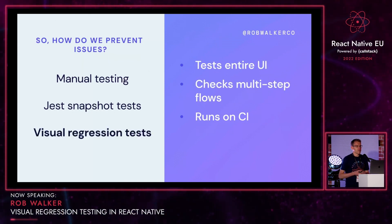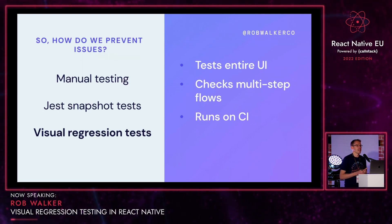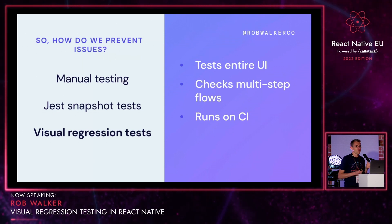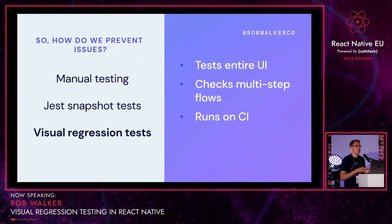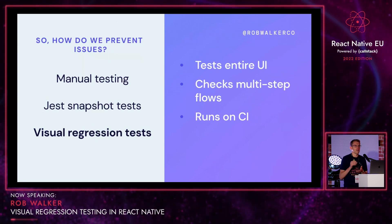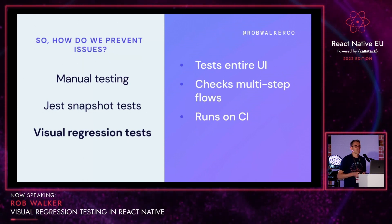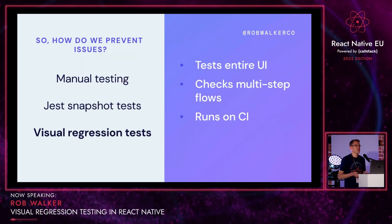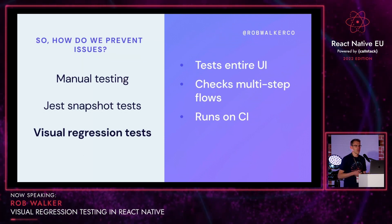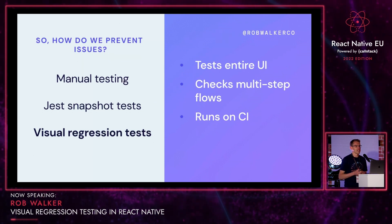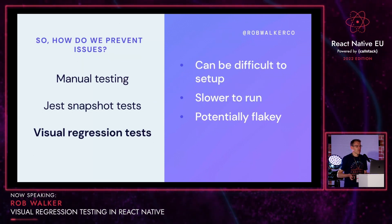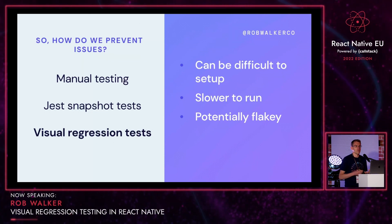Third, and probably the rarest form, is visual regression tests. This tests the entire UI — everything that's actually rendered to the screen. You can check multiple-stage flows, going through a login process on the phone and screenshotting as you go. You can run it on CI using an emulator or simulator, removing the need to manually run tests. However, it can be more difficult to set up, it's slower to run on CI because you have to install, boot, and run an emulator, and tests can potentially be flaky.